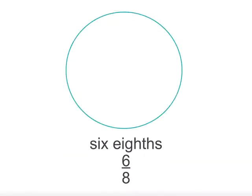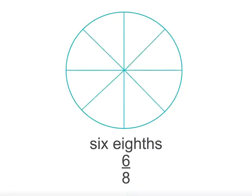Now if we want to represent six eighths, first we divide the shape into eight equal parts to show eighths, and then we shade in six of them to show six eighths.